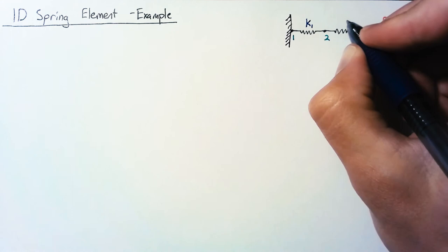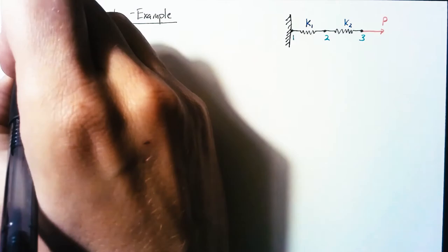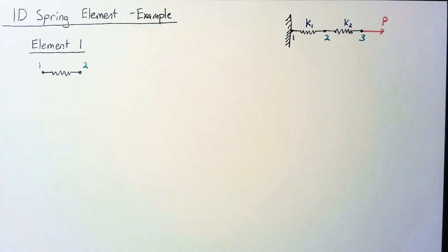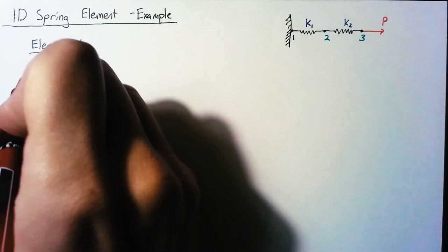The first step here is to split up our system into individual elements. Element 1 runs from node 1 to node 2, and it has a stiffness of K1, and it's going to be loaded on both sides. Now, the naming convention for the forces gets a little tricky.